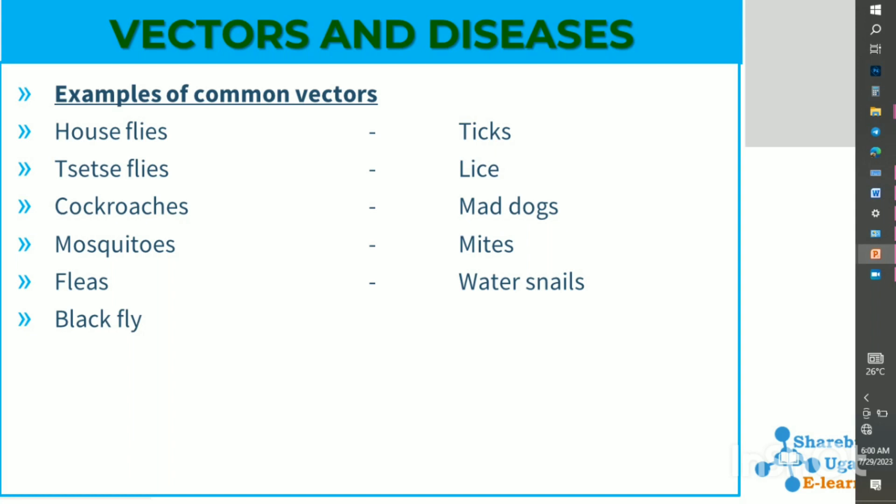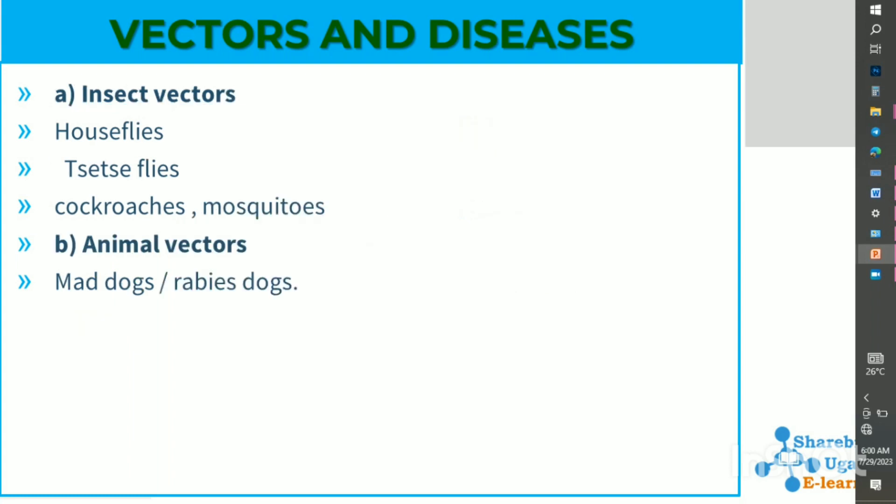Examples of common vectors include houseflies, tse-tse flies, cockroaches, mosquitoes, fleas, black flies, ticks, lice, mad dogs, mites, water snails, and others. Insect vectors include houseflies, tse-tse flies, cockroaches, and mosquitoes. Animal vectors include mad dogs, also known as rabies dogs.